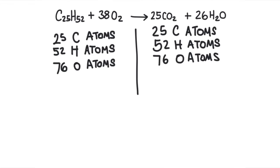There are 50 oxygen atoms in the carbon dioxide molecules, and then there are 26 in the water molecules, for a total of 76 oxygen atoms. So this equation follows conservation of mass.